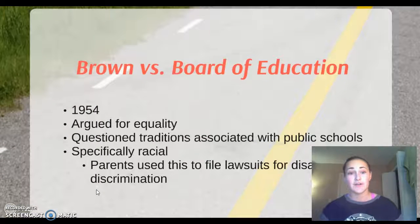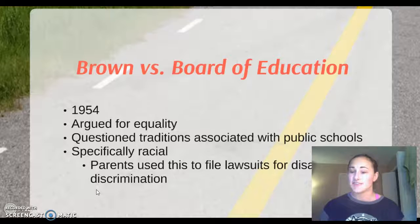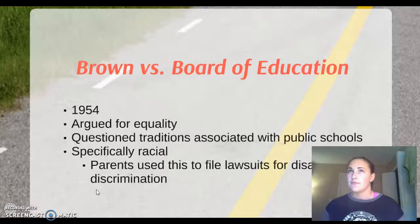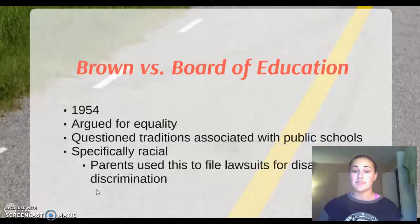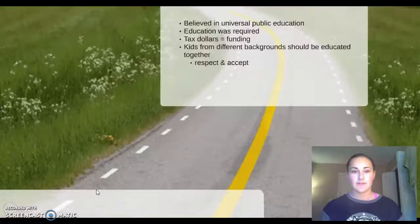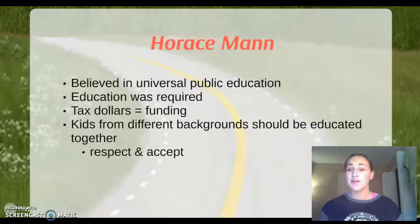Starting off, it only makes sense to begin with Brown versus Board of Education in 1954. This was a court case where the Supreme Court ruled for equality — first it was racial equality being argued, but afterwards parents used this to file lawsuits for disability discrimination as well.